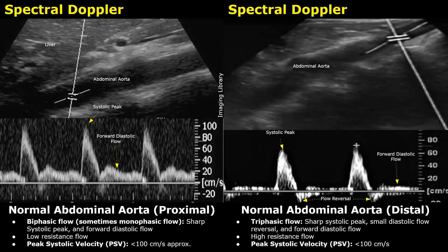The proximal aorta has low resistance flow because it primarily supplies low resistance organs, such as the heart via coronary arteries, the brain via the carotid arteries, the liver and spleen via the celiac trunk, and the kidneys via the renal arteries. These organs receive a constant high volume blood flow to meet their metabolic needs, leading to lower resistance in the vascular beds they supply.